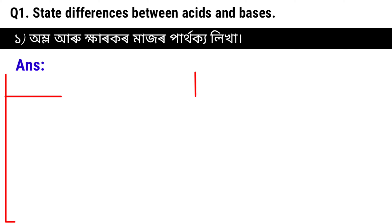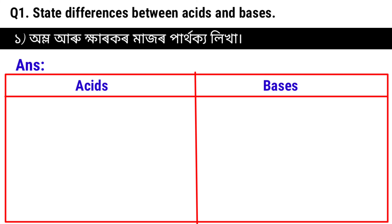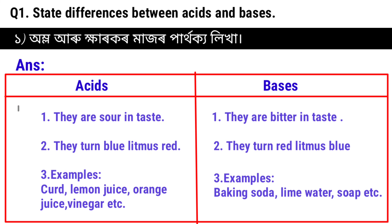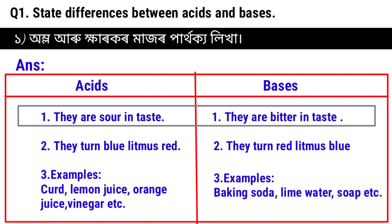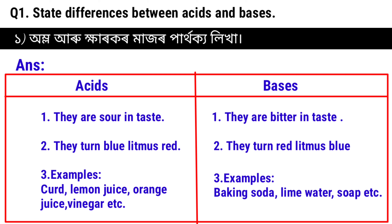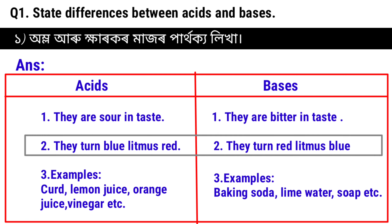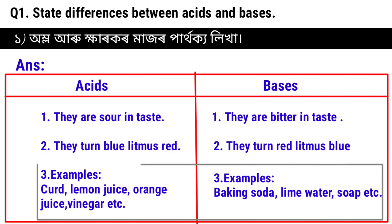In the litmus test: acids turn blue litmus red, and bases turn red litmus blue. For the taste test: acids are sour and bases are bitter. Blue litmus turned red indicates acid; red litmus turned blue indicates base. Some examples of acids are given next.